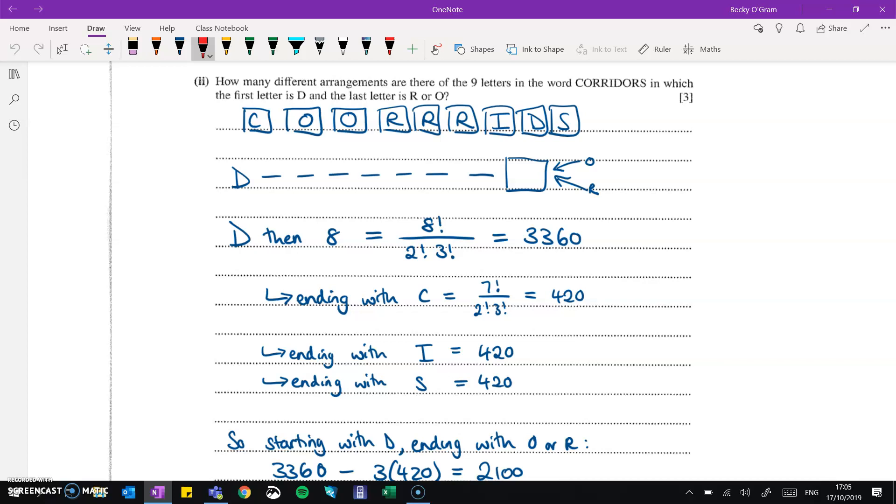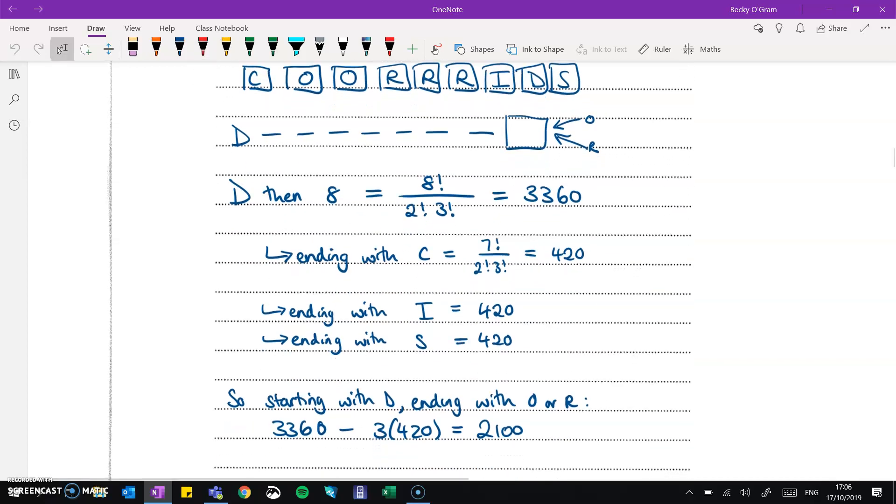So there's 420 ways to make the arrangement where we've stuck C at the end. We do the same thing with I and with S. They come out just the same because there's just one of the I's and the S's. So if we add those up, we've got those three things that are not what we were looking for. So we can take that away from the total possible for filling those eight spaces after the D. So we've got the 3,360, take away three lots of 420, making 2,100. Now, I'm sure there are multiple ways to do this. And I, again, welcome any feedback if I've made mistakes there.